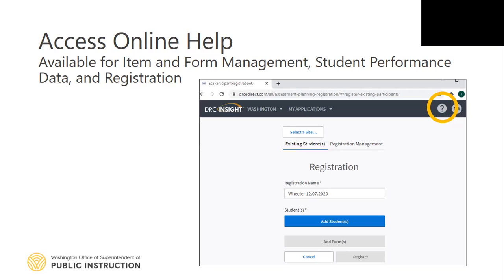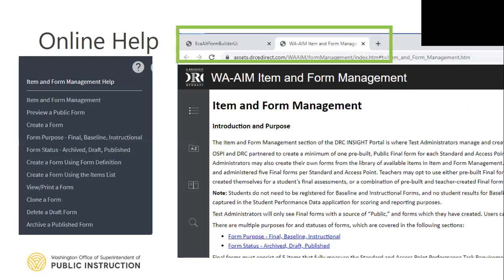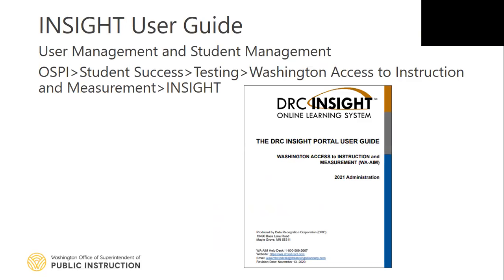Online Help is an electronic user guide available to users when in Item and Form Management, Student Performance Data, or the Registration applications. To access, click the question mark located in the top right-hand corner of the screen. After clicking the question mark icon, a menu of available online help topics will appear, dependent on the application being accessed. After clicking on a topic, information specific to that topic will appear in a new tab within your browser, allowing the user to toggle between the help screen and the application. Online Help is currently not available for User Management or Student Management. Educators should refer to the DRC INSIGHT Portal User Guide for written instructions on working within these applications.